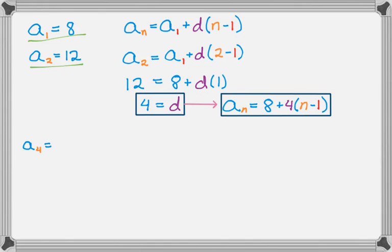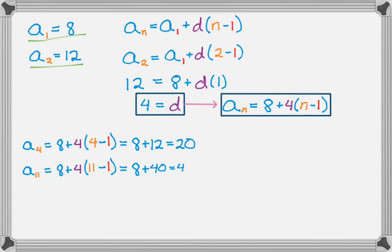Now let's find a₄. I'll take this formula and replace n with 4. That gives me 8 + 4(4-1) = 8 + 12 = 20. Or maybe I want to find the 11th term. Once I have this formula, I can work out any term. So a₁₁ = 8 + 4(11-1) = 8 + 40 = 48.